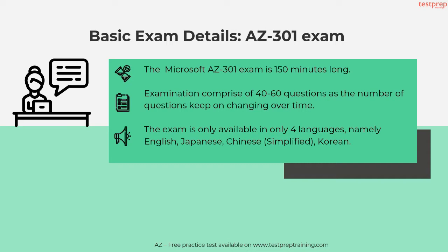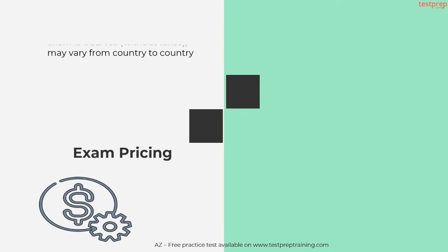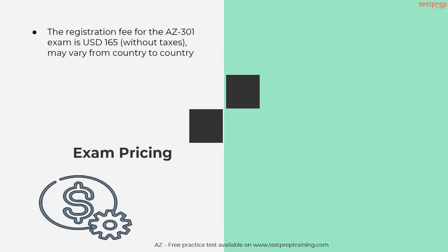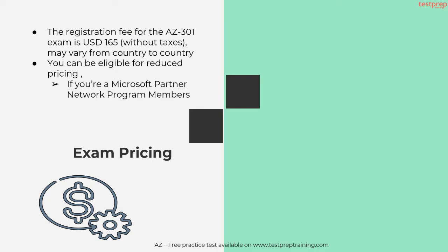The four available languages include English, Japanese, Chinese, and Korean. Exam Pricing: The registration fee for the AZ-301 exam is 165 US dollars without taxes, and may vary from country to country. You can be eligible for reduced pricing if you're a Microsoft Partner Network Program member, or if you submit your valid educational credentials.